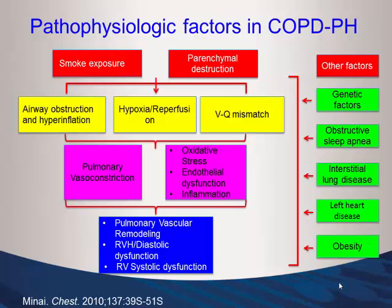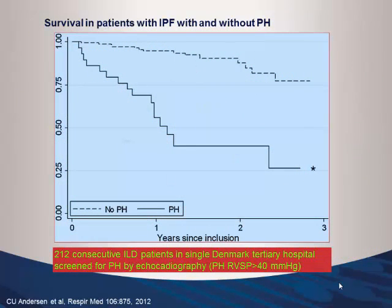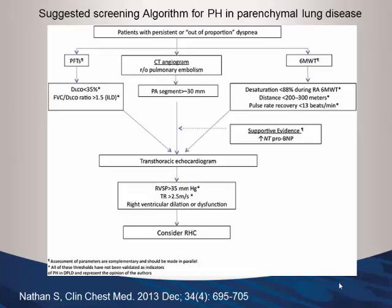Obstructive sleep apnea, interstitial disease, and combined pulmonary fibrosis and emphysema all worsen prognosis further. For IPF, a Danish study showed by echocardiography a clear difference in survival in IPF patients with versus without pulmonary hypertension — very marked difference extending up to three years. Krishna and anyone seeing ILD notices that pulmonary hypertension is a serious complication for these patients.